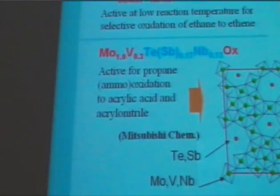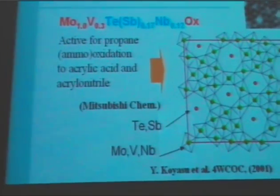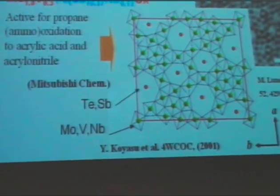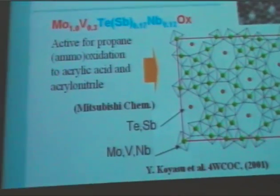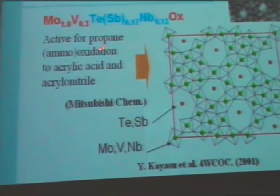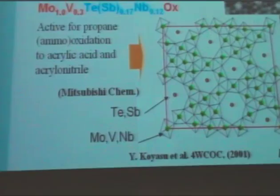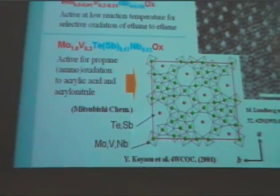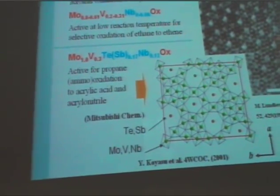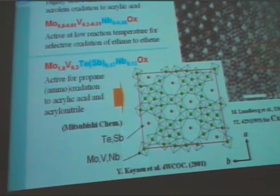More recently, a chemical company developed this complicated material, but it has a single-phase material. And it's very active for propane ammoniation, as well as oxidation to acrylic and acrylic acid. The performance is quite nice. During those developments, people said this is very, very difficult to produce as single-crystalline material.